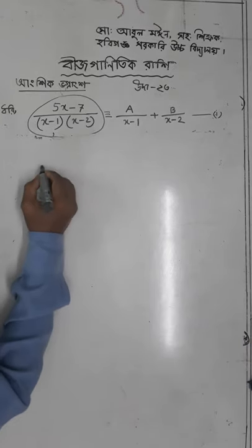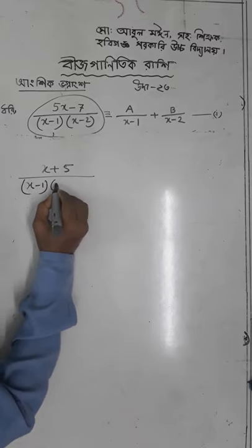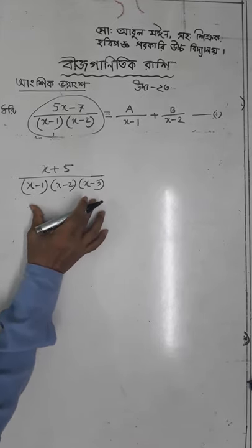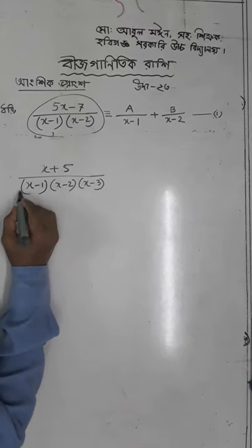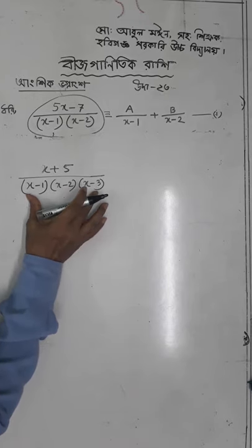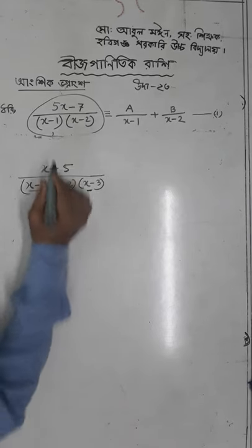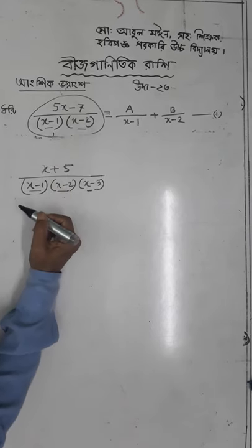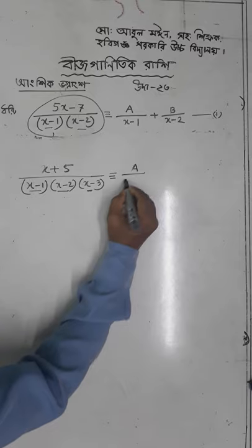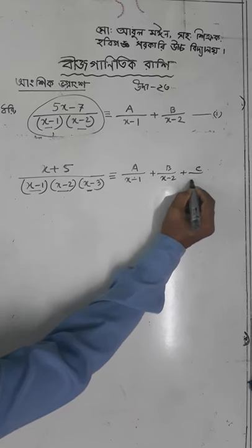I will write x plus 5 into x minus 1 into x minus 2 into x minus 3. This is equal to A by x minus 1 plus B by x minus 2 plus C by x minus 3.